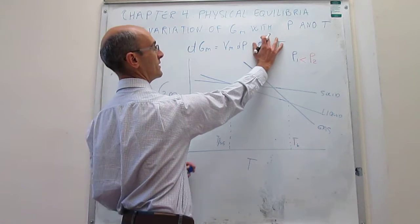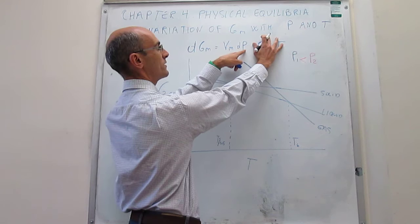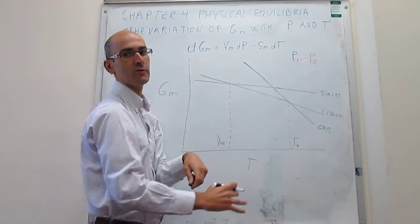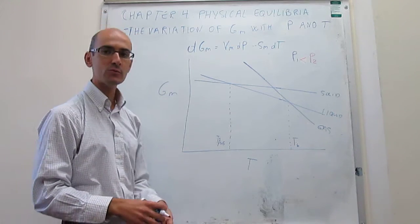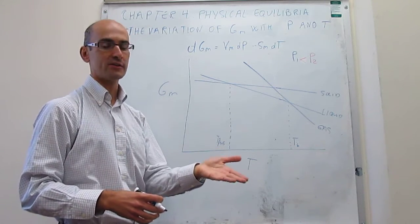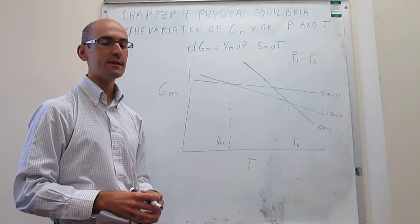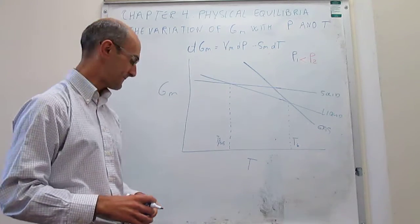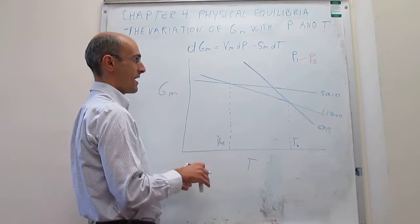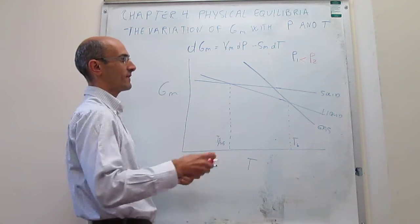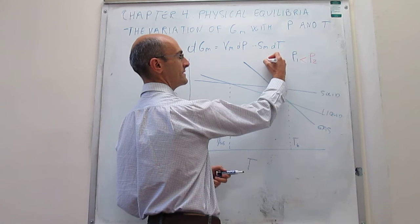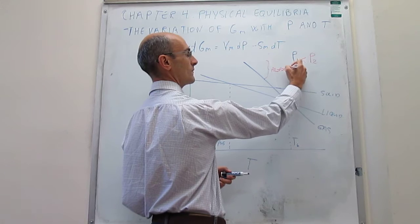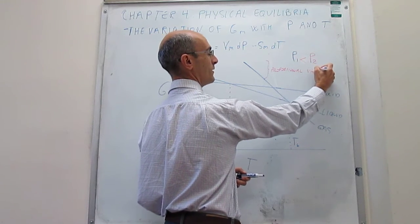Notice that this is the dependence of the molar Gibbs energy on pressure. If you increase the pressure, the Gibbs energy increases according to the value of the molar volume. For a gas, we know that the molar volume is very large compared to that of the liquid or solid phases. That means that if we increase the pressure, the molar Gibbs energy is going to increase by quite a lot. At pressure P2, which is higher than P1, the gas line would be offset, and this difference is proportional to the molar volume of the gas.